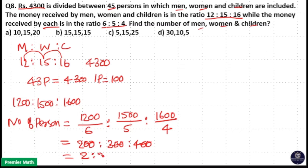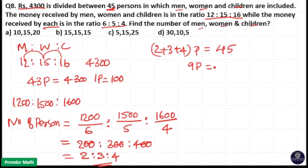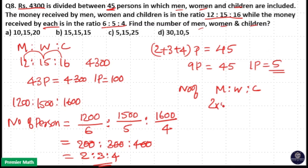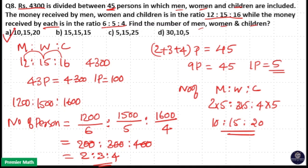The ratio of persons is 2 is to 3 is to 4. Since there are 45 persons total, 2 plus 3 plus 4 equals 9 parts equals 45, so each part equals 5. Number of men, women and children becomes 2 × 5 : 3 × 5 : 4 × 5, that is 10 is to 15 is to 20. Option A is your answer.